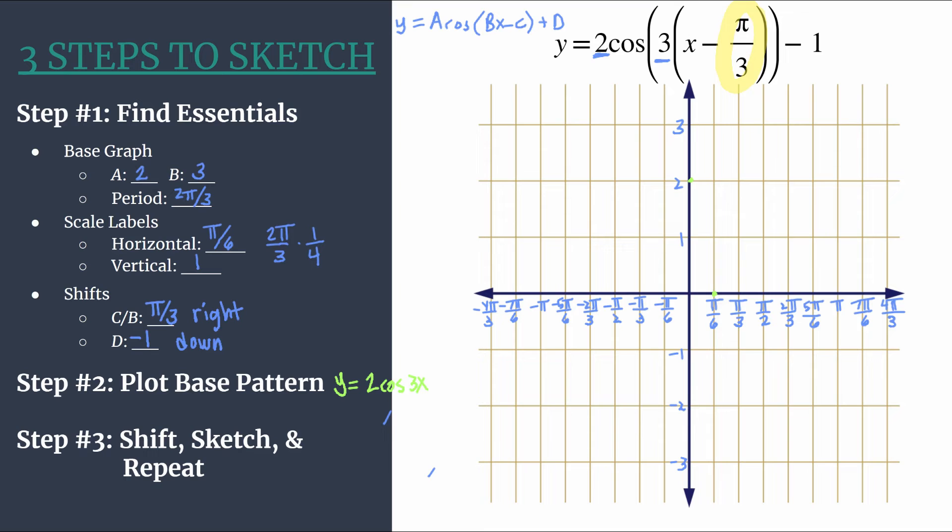Our next point in the pattern will happen at the next horizontal tick mark to the right at pi over three. And its Y coordinate will just be the opposite of A. It's going to be our minimum. So negative two. And then our final point in the pattern will happen at the third horizontal tick mark. And it's another zero. So at pi over two.